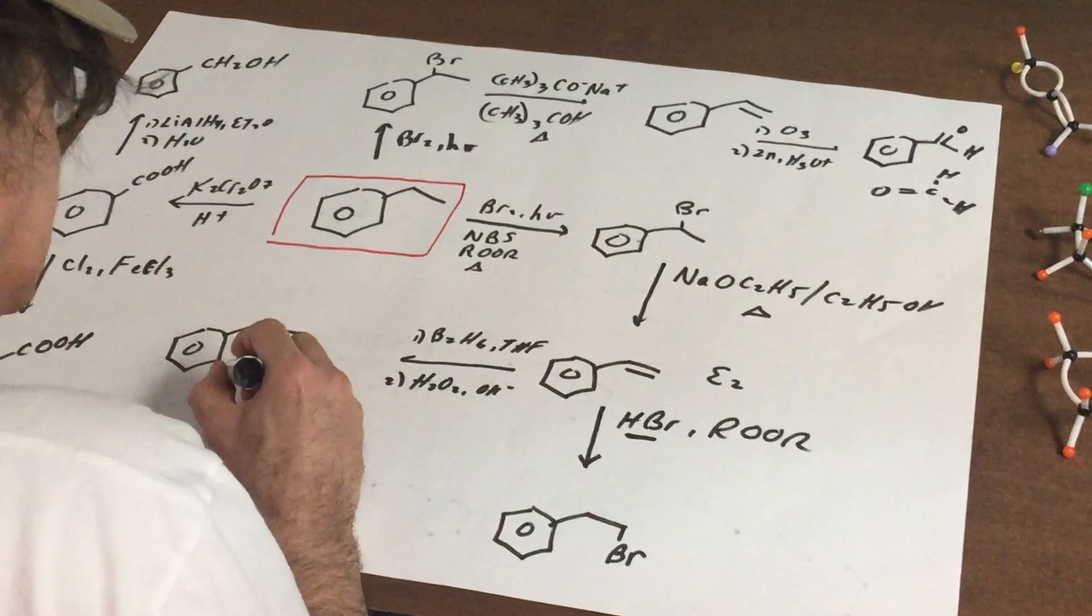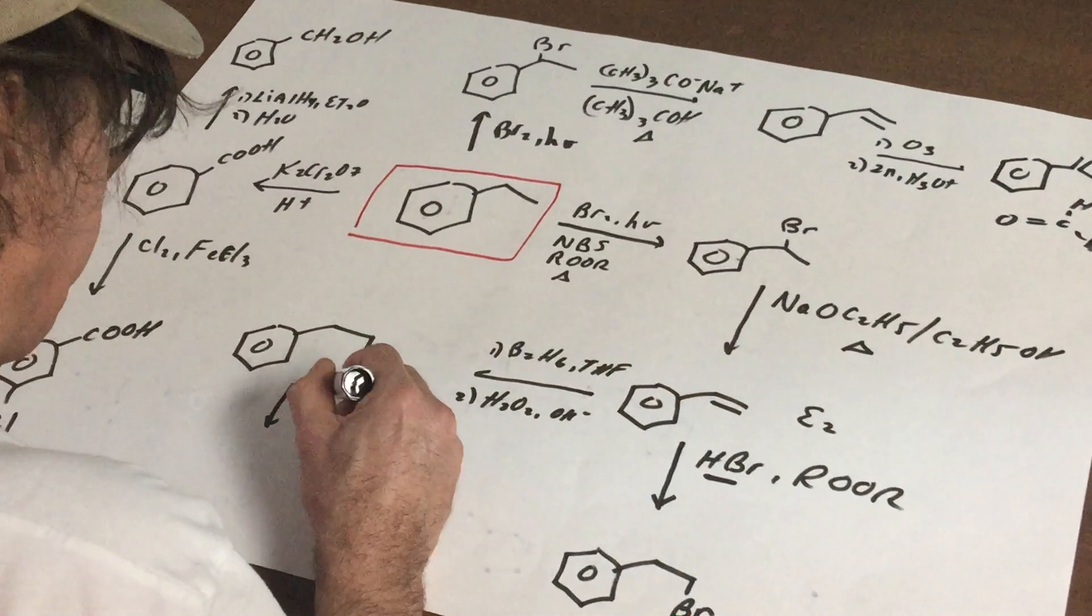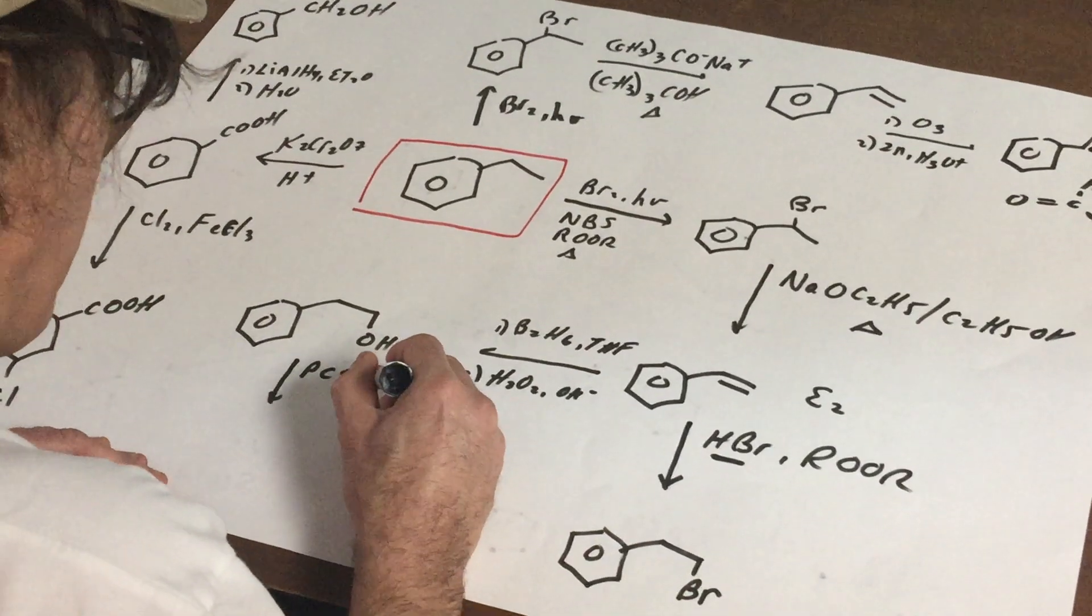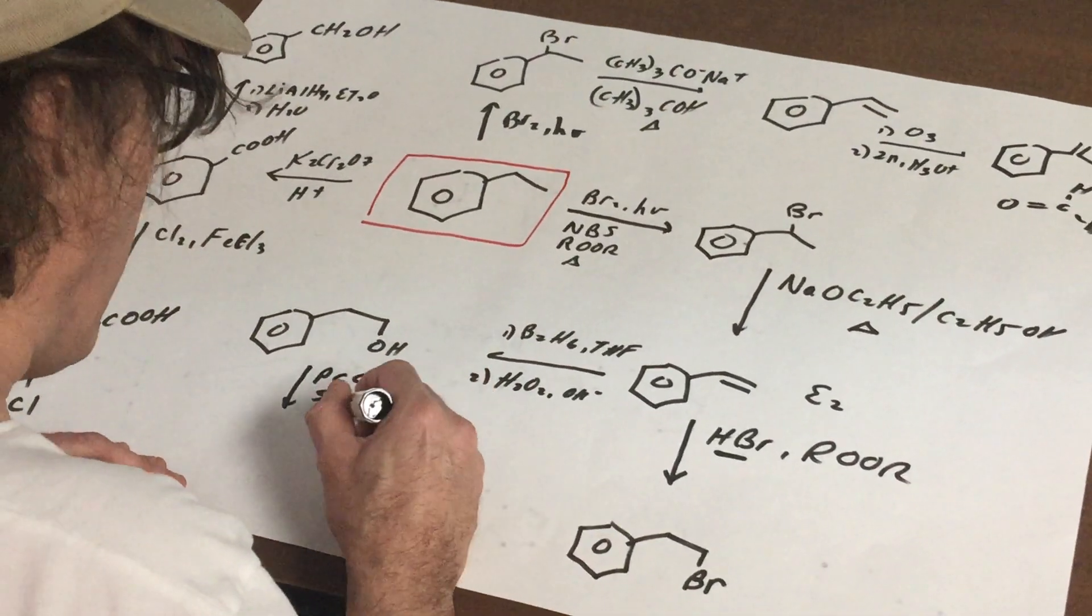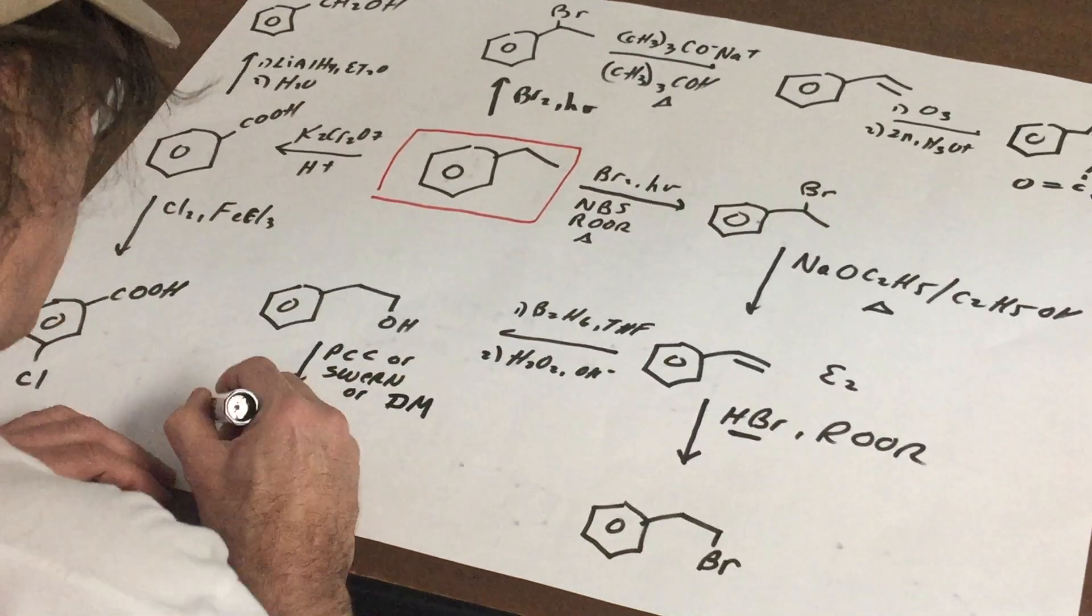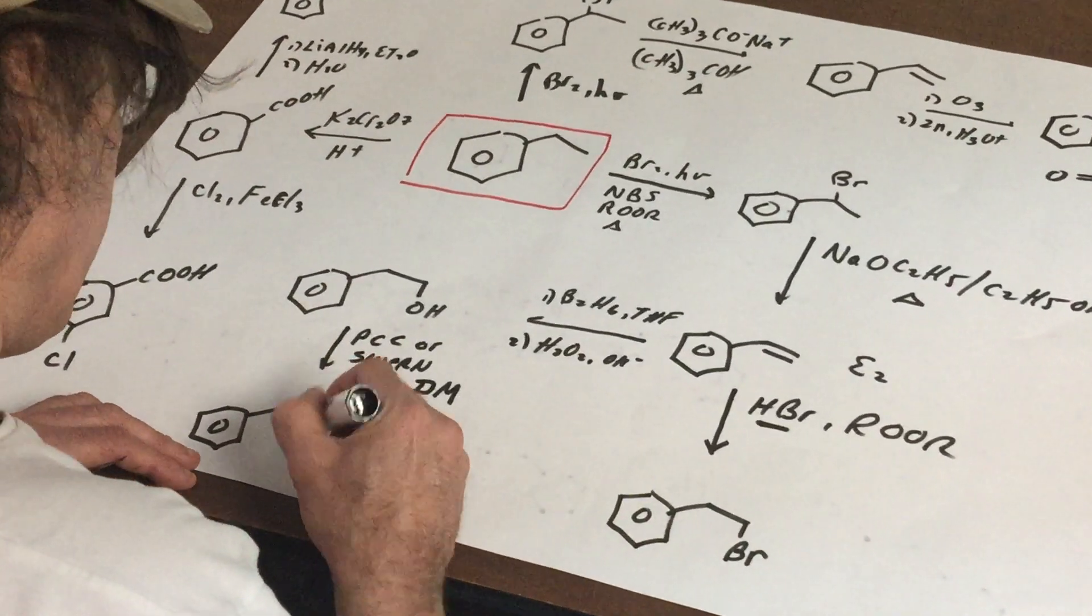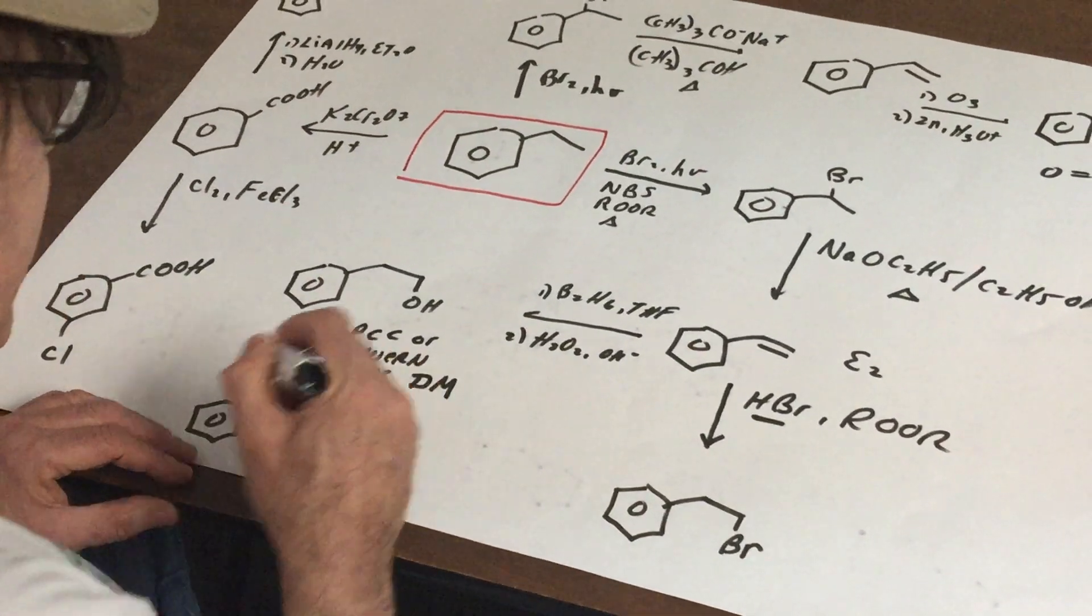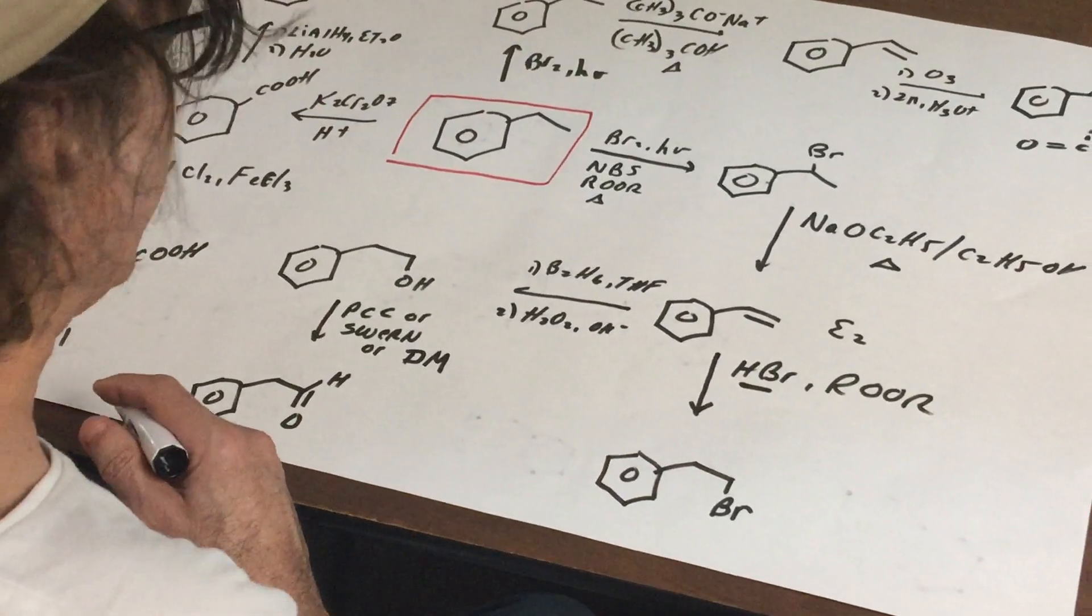If we took this compound, going back now, and I added PCC, or I did a reaction called Swern, or what we call the Dess-Martin reaction. Those three simply will take the primary alcohol into the aldehyde. Absolute must-have for the DAT exam.